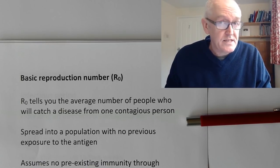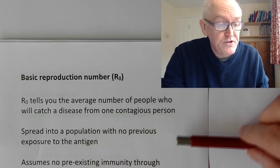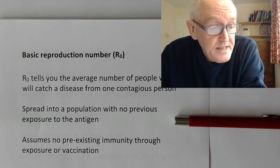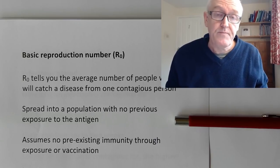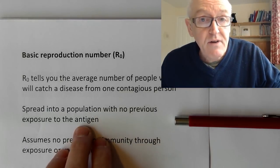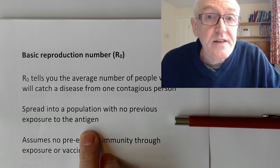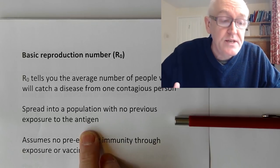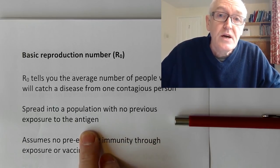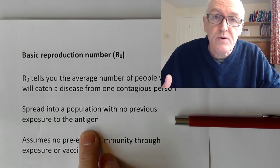How transmissible is a disease? How is it spreading through the population? This assumes we're spreading into a population with no previous exposure to the antigen. The antigen is a virus or bacteria causing the infection — it is antigenic, what the body recognizes as foreign. In response, the body makes immune proteins called antibodies. Because someone has no previous exposure, they will not have any antibodies and will not have immunity, making them very vulnerable to the disease.